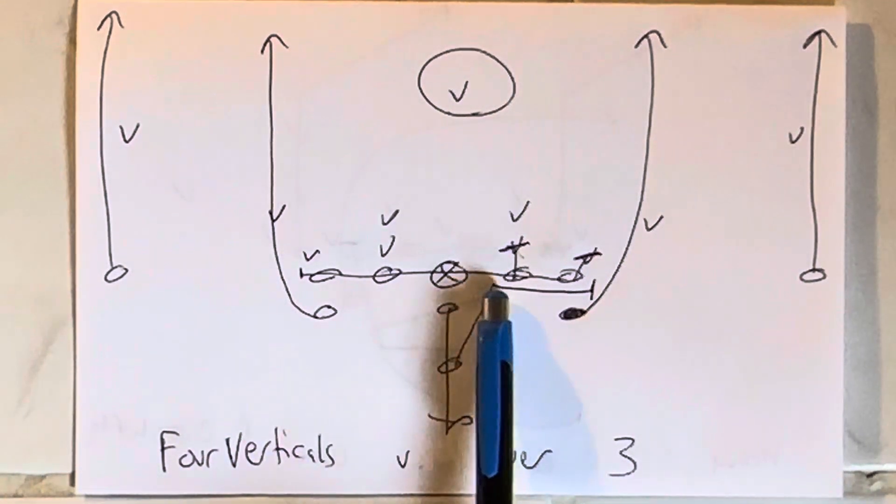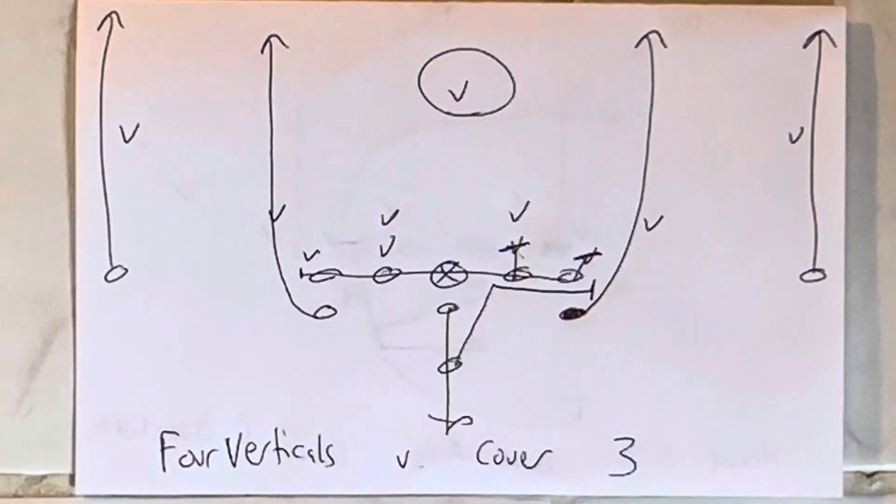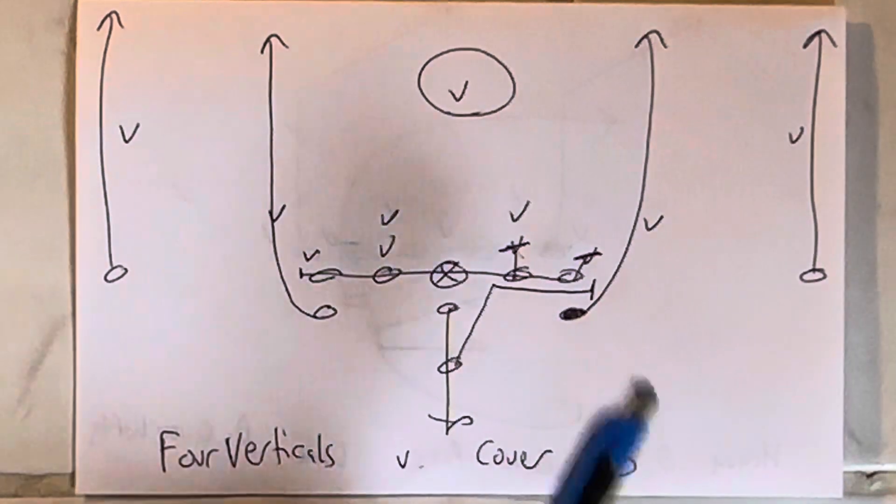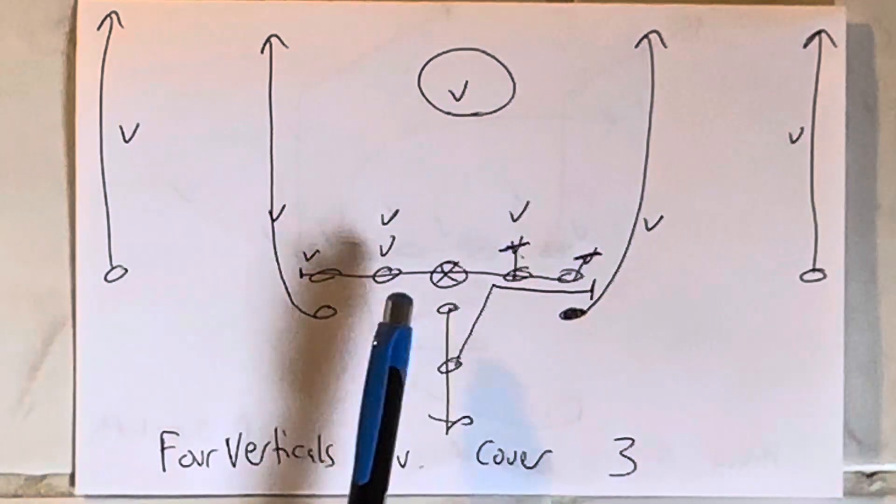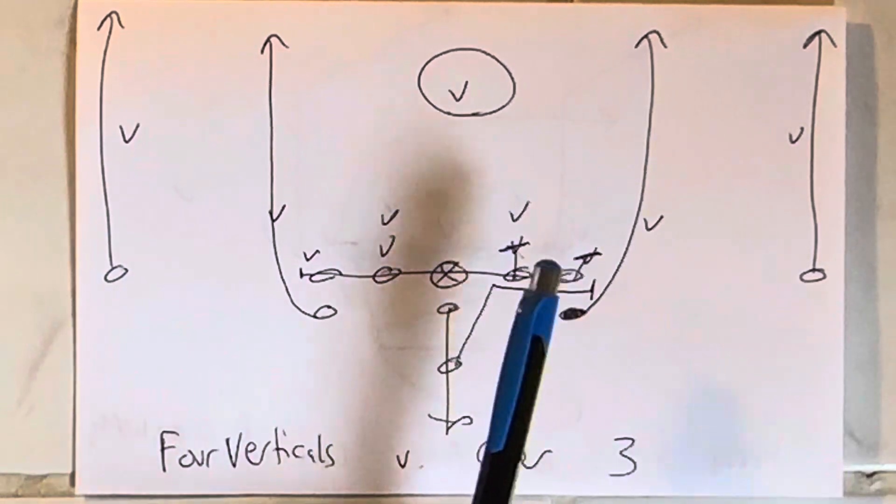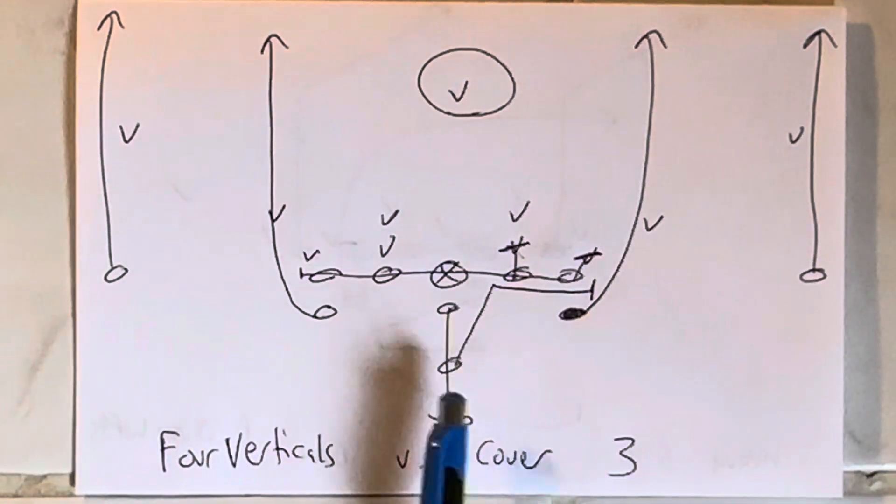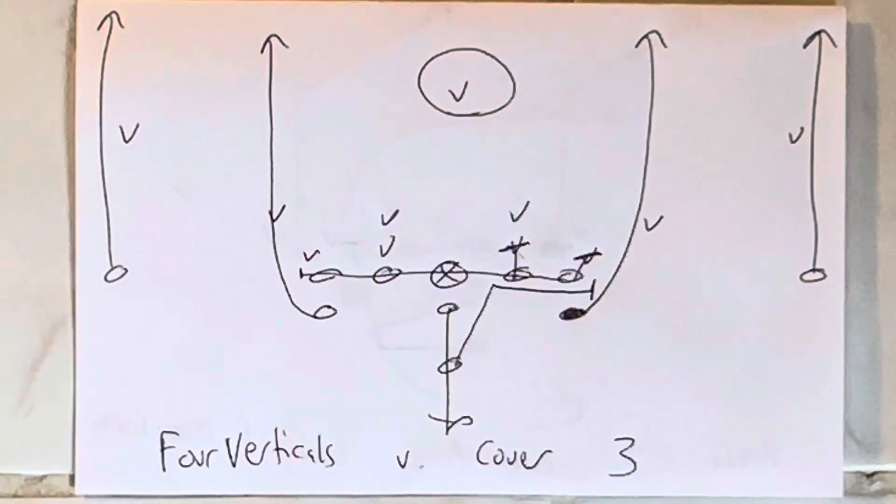He would come through the A-gap looking for the mic. If the mic didn't show, he would then go down the line and block the first threat that showed off the corner. So there's six in protection. You're sliding to one side and you're man on the other side with the B-back scanning. He's got the mic to the overhang.